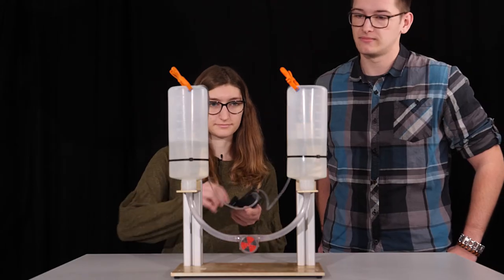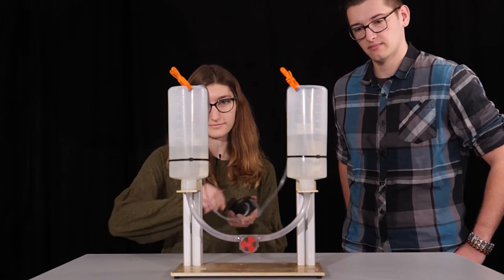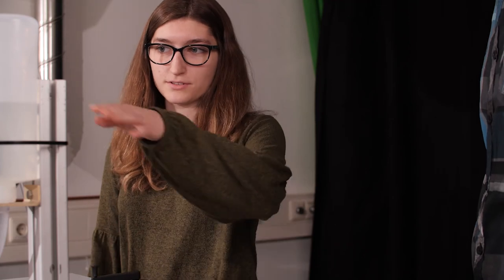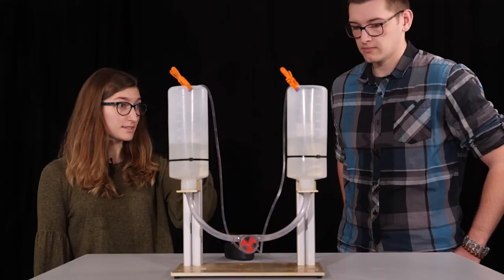Alright. I see. So the difference in the water height represents a voltage polarity, and that means that charge is being moved from this side over to this side. Exactly.